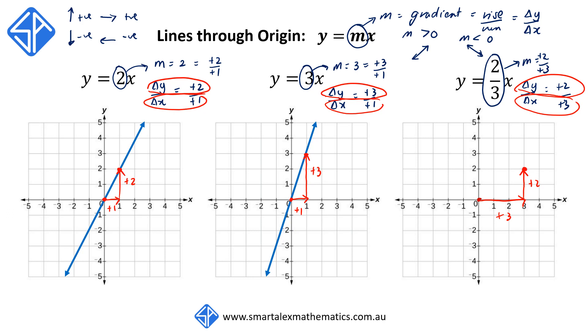We join up the two dots and we now have the graph y is equal to two-thirds x. In all these cases, m is positive and all these lines are sloping towards the right.